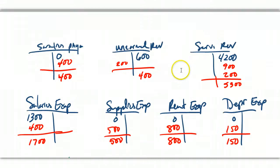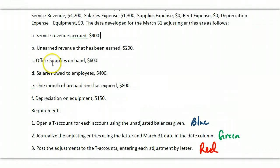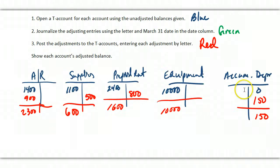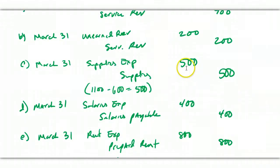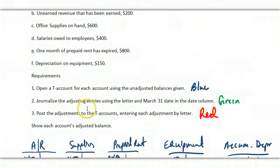And you can see when I post that, I post the $500. That gives me an ending balance of $600. So my adjusted balance is $600, and that ties to what it says I should have on hand. That's important. If we had done this backwards, if we had done this journal entry for $600, then our supplies would have shown $500 even though we counted $600, and that would be a mistake.